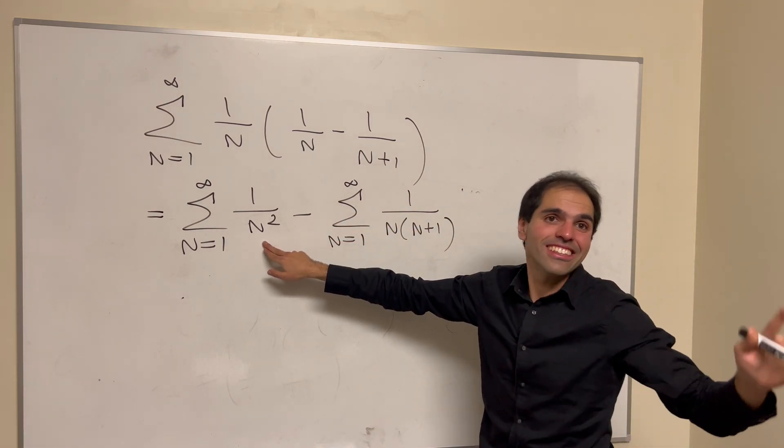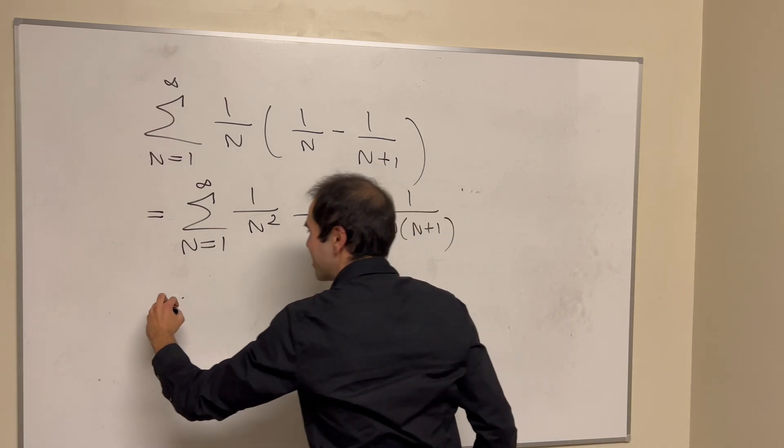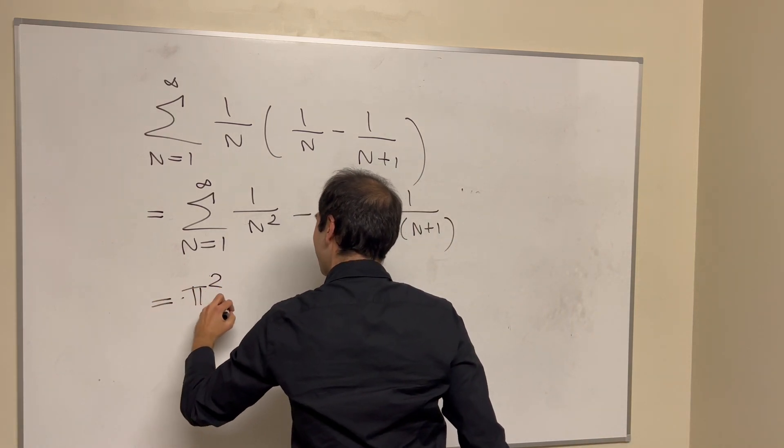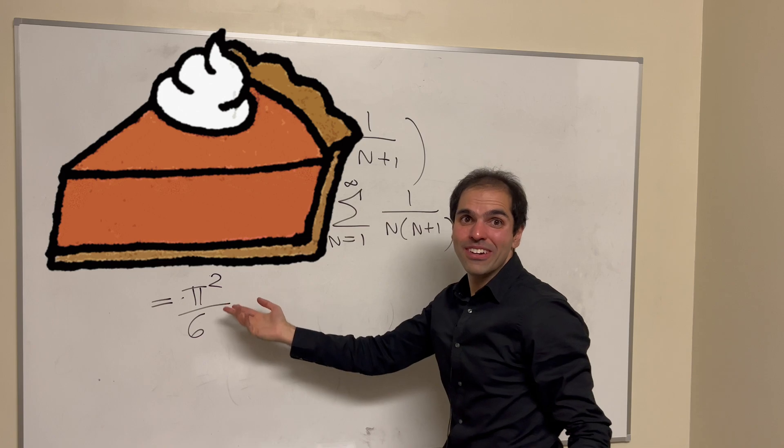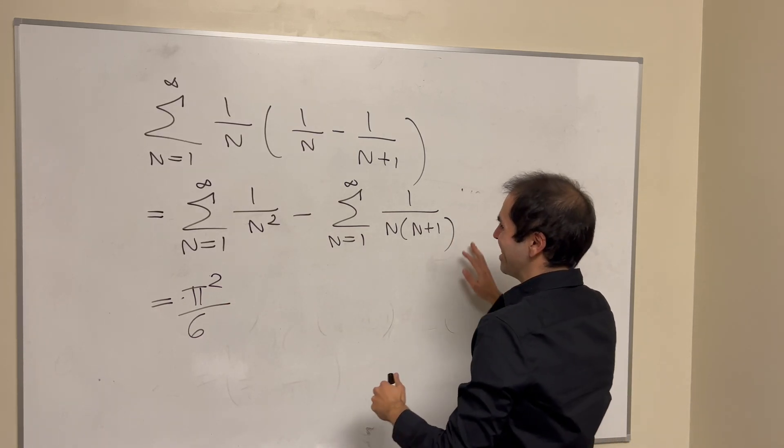But this one, it's one of my favorite sums because it's pi squared over 6. I mean, I like pi, but imagine pi squared. How cool is that?